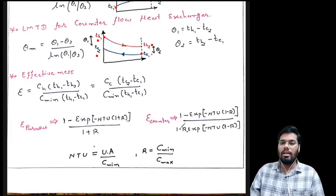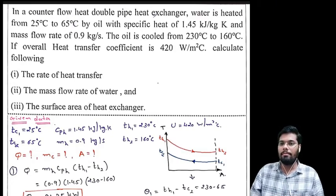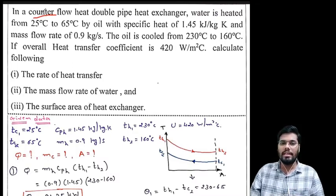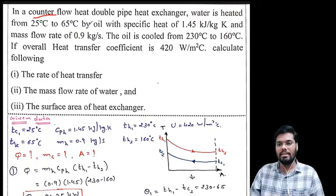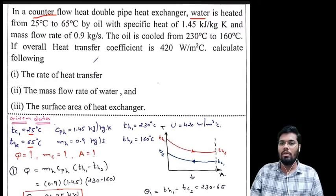Let's start our first numerical based on counter flow configuration. In a counter flow double pipe heat exchanger, water is heated from 25°C to 65°C — so water is our cold fluid, with TC1 = 25°C and TC2 = 65°C. Oil is our hot fluid, which cools from 230°C to 160°C, so TH1 = 230°C and TH2 = 160°C.